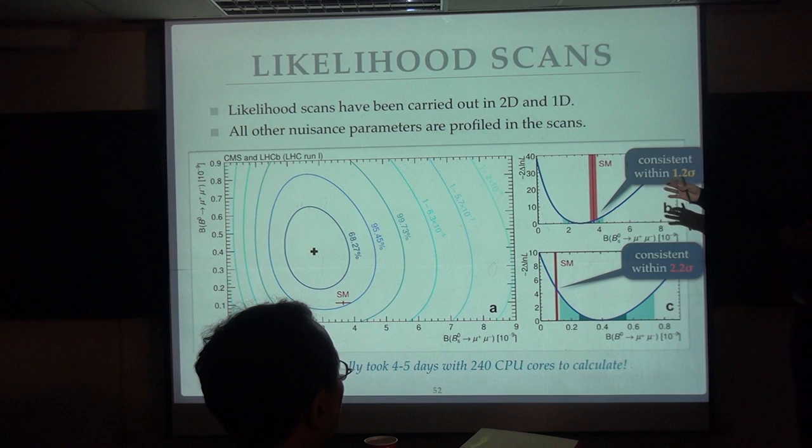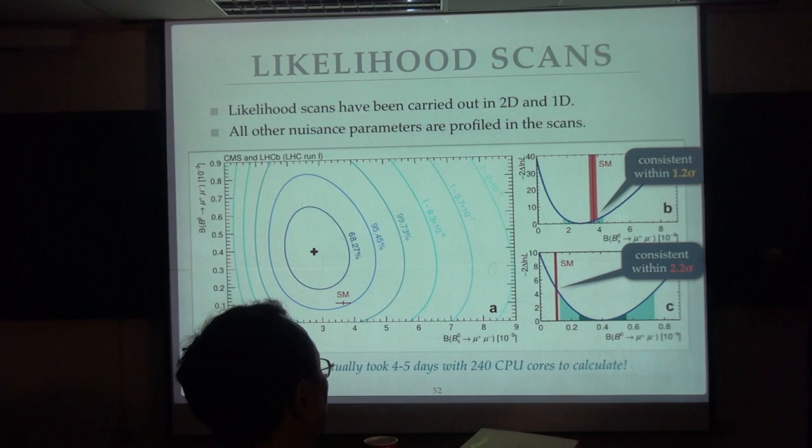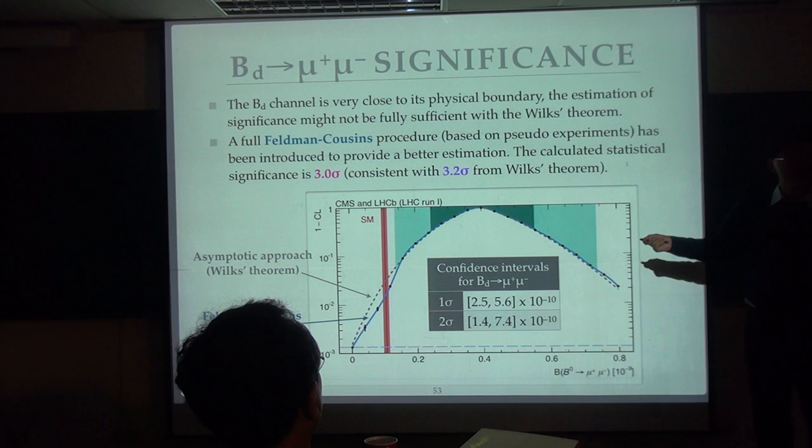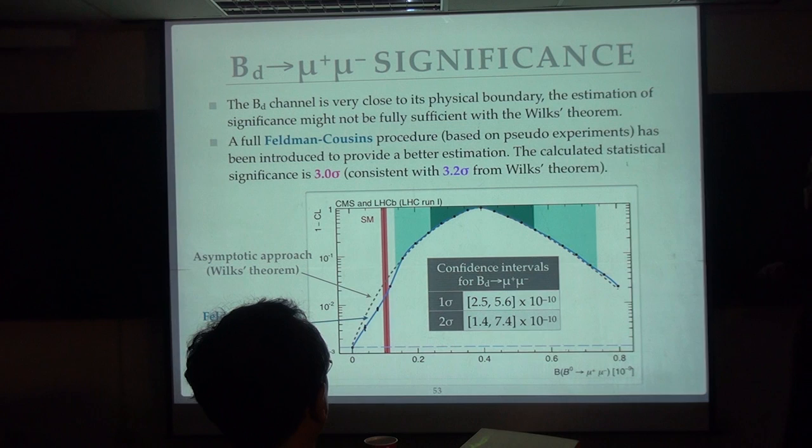But you use profile likelihoods. I'm getting too technical. Yeah. No worries. Do you both use profile likelihoods? Approximate. These are approximate things. Yeah. They are all profile likelihoods. There's another thing that you may not trust in the low statistics. Exactly. So that's why we introduced these toy experiments again. Oh. Yeah. So this is, we've done the full toy experiments study for BD. Only for BD. For BD, it will take forever. No way. But BD is three sigma still doable within like a week scale.